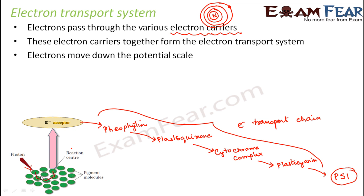Here, excess energy was provided by the light energy, because of which the electron got excited and went to higher energy levels. But now it wants to come down to lower energy levels. So it moves down the potential scale, passing from one electron carrier to another through all the carriers which form the electron transport chain. Finally, the low energy electron is passed on to PS1 — the electron passed to PS1 is a low energy electron. The electron moves down this potential scale because it wants to attain more stability, moving down the energy gradient.